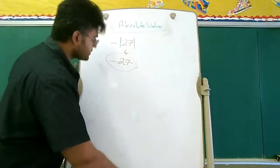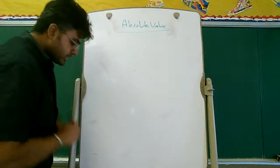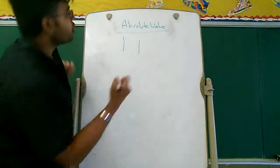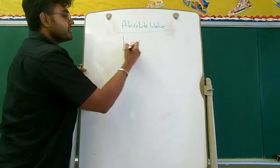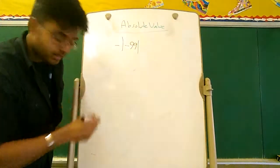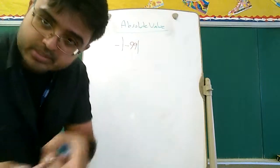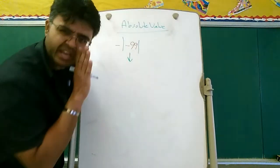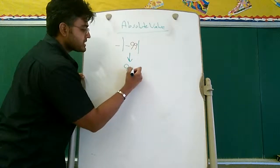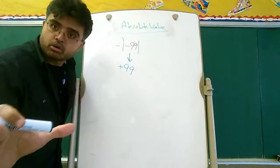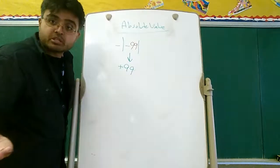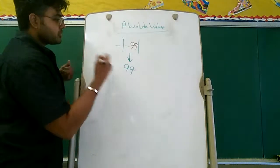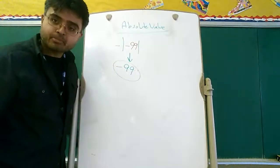Let's try another example. Let's do the Absolute Value of minus 99, with a minus sign in front. Absolute Value will only work on numbers inside the box. The Absolute Value of minus 99 — negative number, change it to positive — it becomes plus 99. But wait, there's a minus sign in front; it's on the outside of the box, so we have to keep it. The minus sign comes down and the answer becomes minus 99.